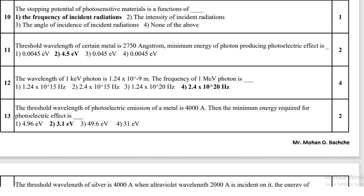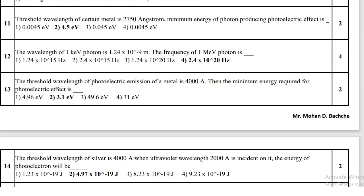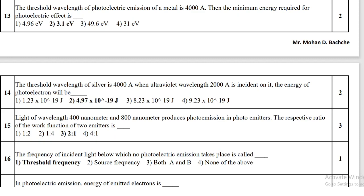The frequency of a 1 MeV photon is 2.4 × 10²⁰ hertz. The threshold wavelength of photoelectric emission of a metal is 4000 angstrom; the minimum energy required for the photoelectric effect is 3.1 electron volt.